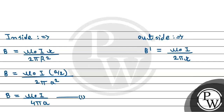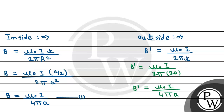In the same way, for the outside point, we have the formula: B' equals mu-naught into I divided by 2 pi r, where r is the distance from the axis, which is equal to 2A. So B' becomes equal to mu-naught into I divided by 4 pi A. This is equation two.